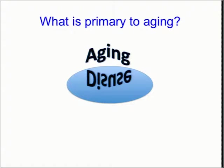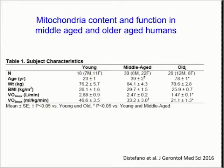I would argue that aging and disuse are, in some ways, mirror images of each other. Our work tries to really disentangle which comes first. These are data we published last year — a simple cross-sectional comparison.